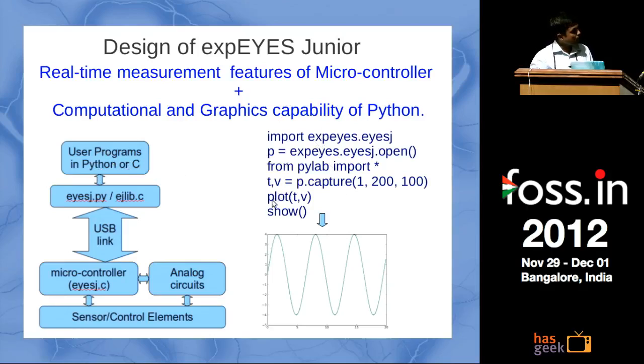You can see here this small program. First two lines are importing the library and creating an object. The third one is the matplotlib library. This one line captures, say, 300 samples with 100 microsecond between two samples and plots it. This is the output. This is how you can code it in Python. If someone wants to set up a new experiment to study something, he can easily write his own program. He does not have to depend on whatever GUI is provided.